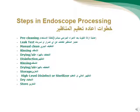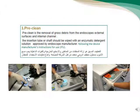Steps in endoscopy processing: Pre-cleaning, Leak test, Manual cleaning, Rinsing, Drying, Disinfection, Rinsing, Drying, Storage. Pre-cleaning is the removal of gross soil from the endoscope's external surface and internal channels using an enzymatic detergent, following manufacturer instructions.